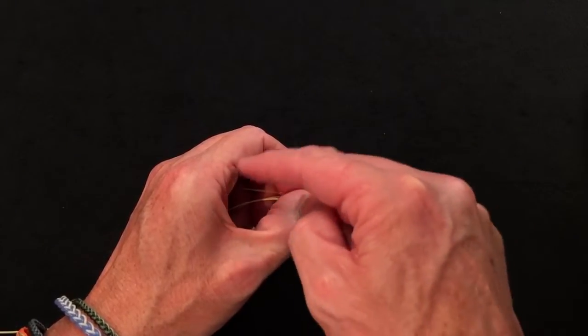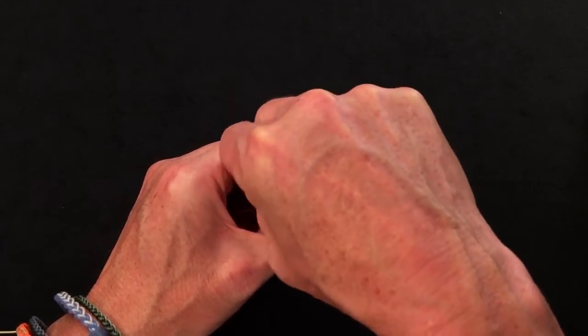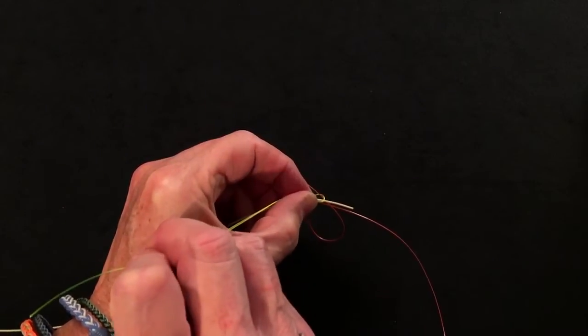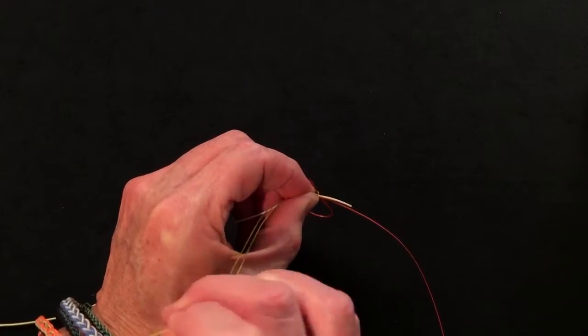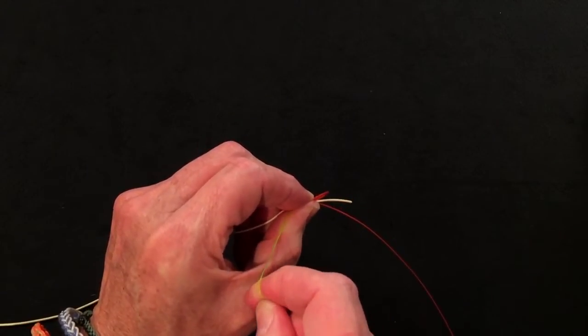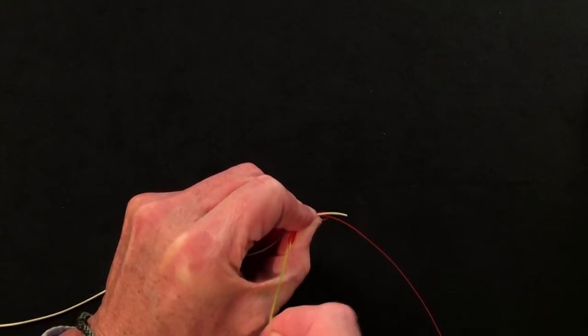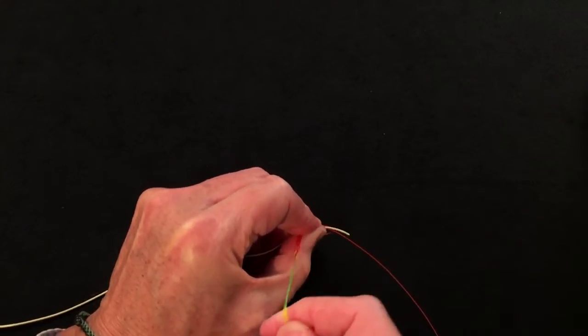Then I kind of go through this gap in my hand, grab the yellow bits, both of them, and start to pull. You can kind of see if we just manipulate that and twist that around what I'm doing: I'm pulling that red tag through underneath the coils and out the other side like that.